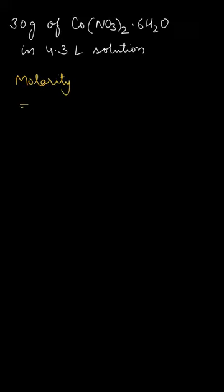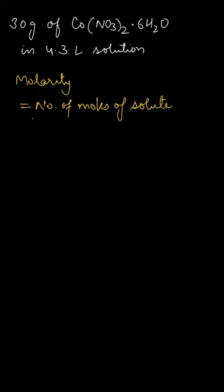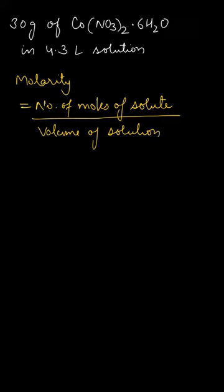We know that the formula of molarity is given by the number of moles of solute divided by the volume of solution — we take the volume of solution in liters. So that's the formula for molarity. Here we have to calculate the number of moles of the given solute, that is cobalt nitrate hexahydrate.